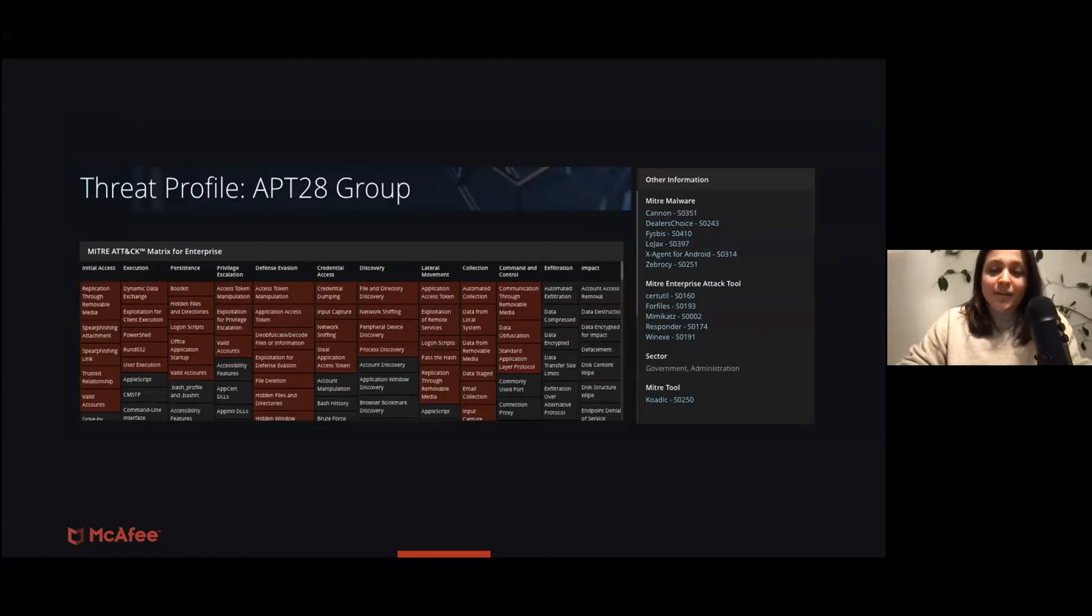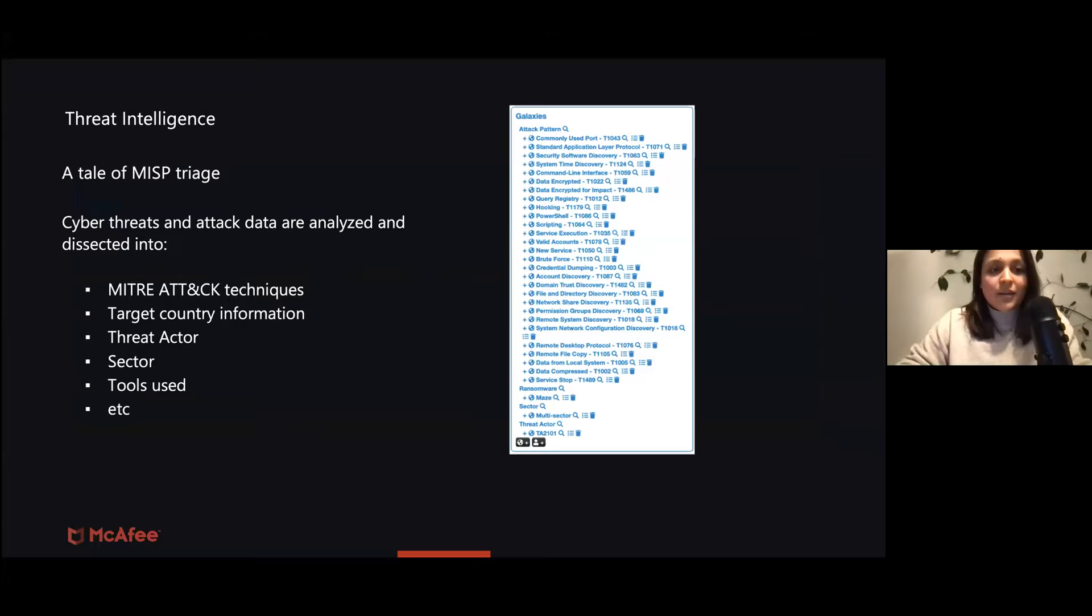Basically, this is what our team is building currently—a broad overview of threats and threat profiles and everything about these threats. So MITRE techniques, threat actors, sector targeted, country targeted, and all of this. But in the back end, it basically looks like this, because we are using MISP, which is a very powerful tool to deal with a lot of threat intelligence. What we do is we get threats and attacks and events in MISP, and we divide this into MITRE techniques, target information, threat actors, sectors, tools used, et cetera. And this is what it kind of looks like in the back end.